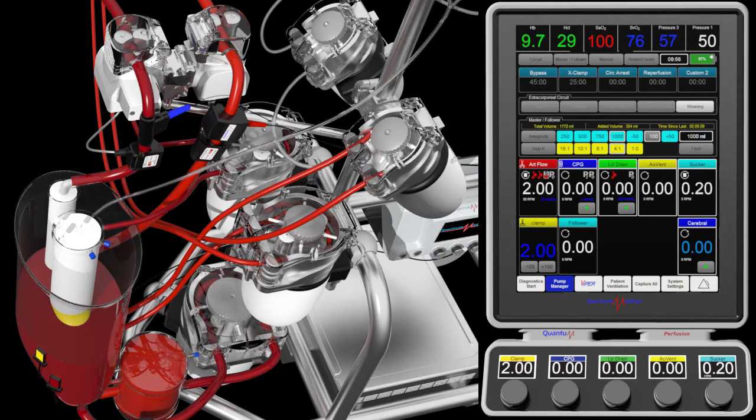While in weaning, flow adjustments are made with the console control knob. Note how the reservoir level stays steady.